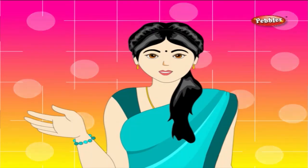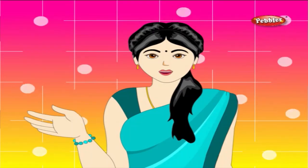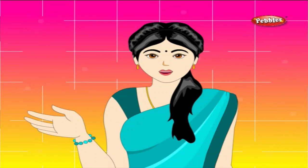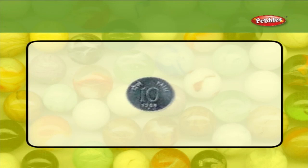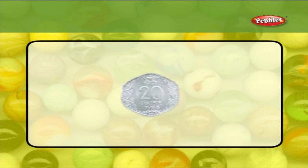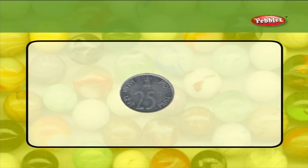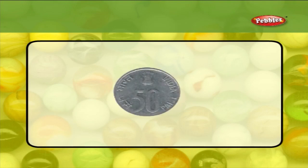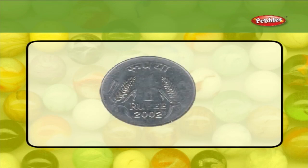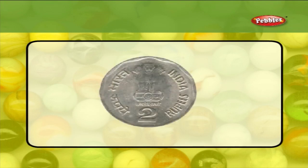Let me first show you the different kinds of coins and notes that we use in our country. This is a 10 paise coin. This is a 20 paise coin. This is a 25 paise coin. This is a 1 rupee coin. This is a 2 rupee coin.